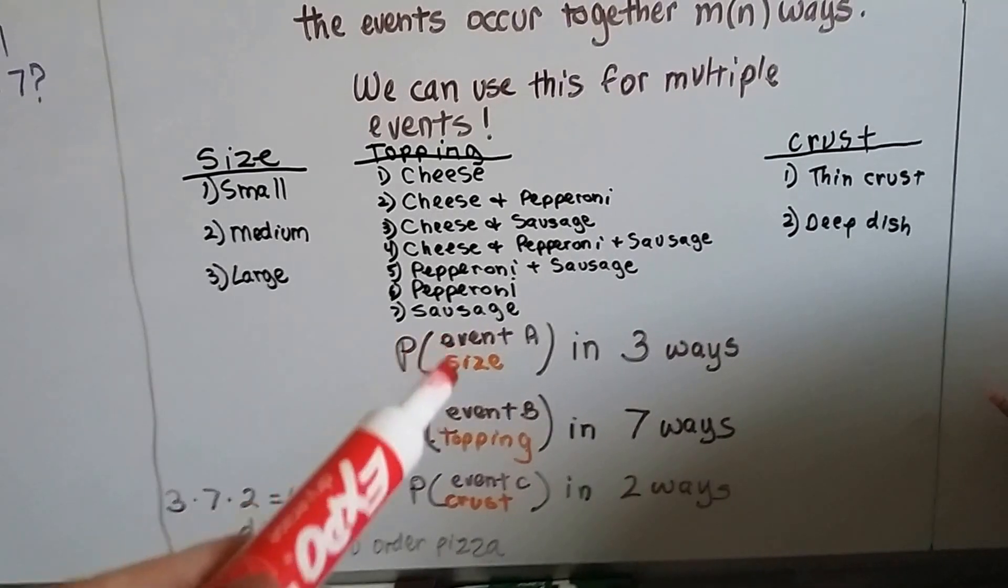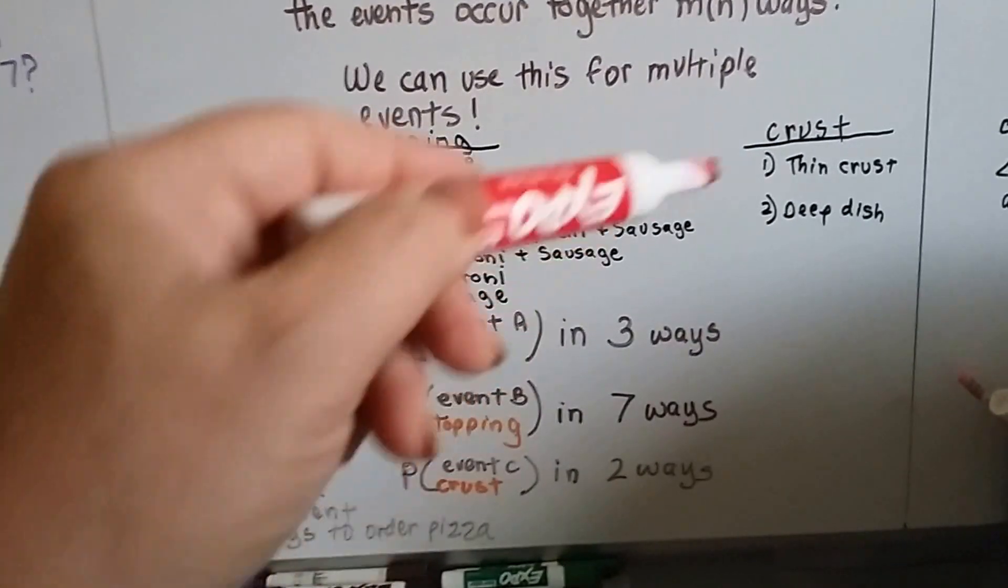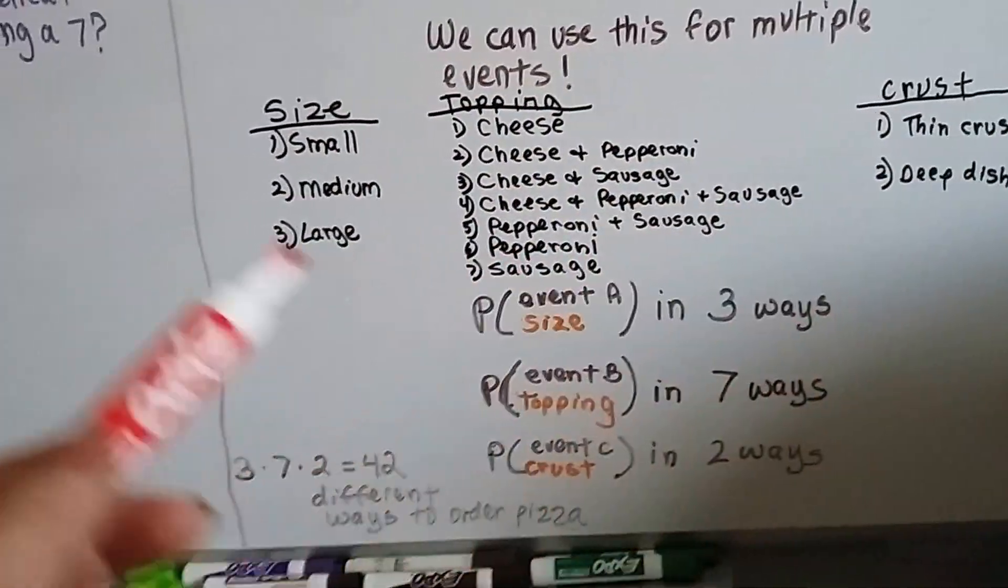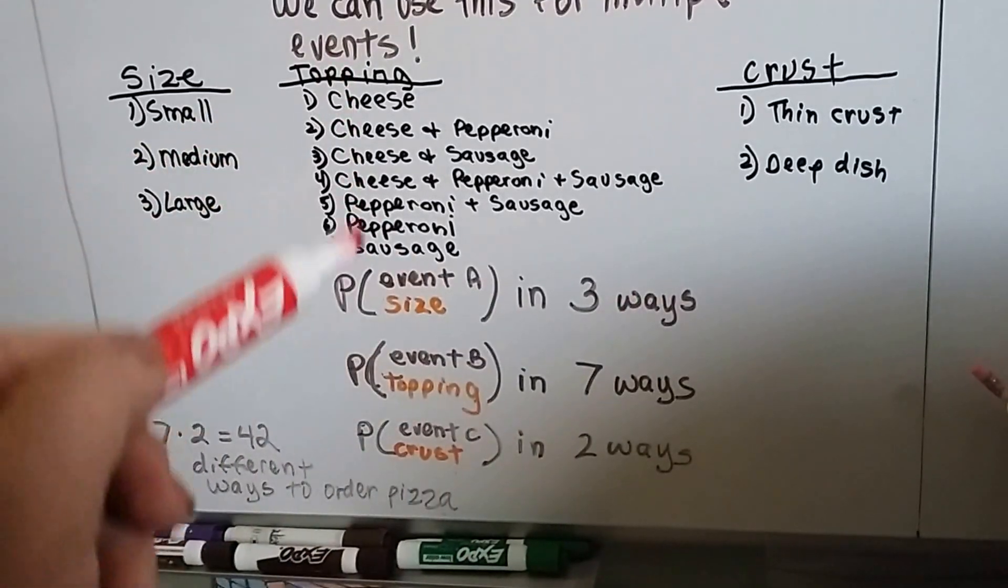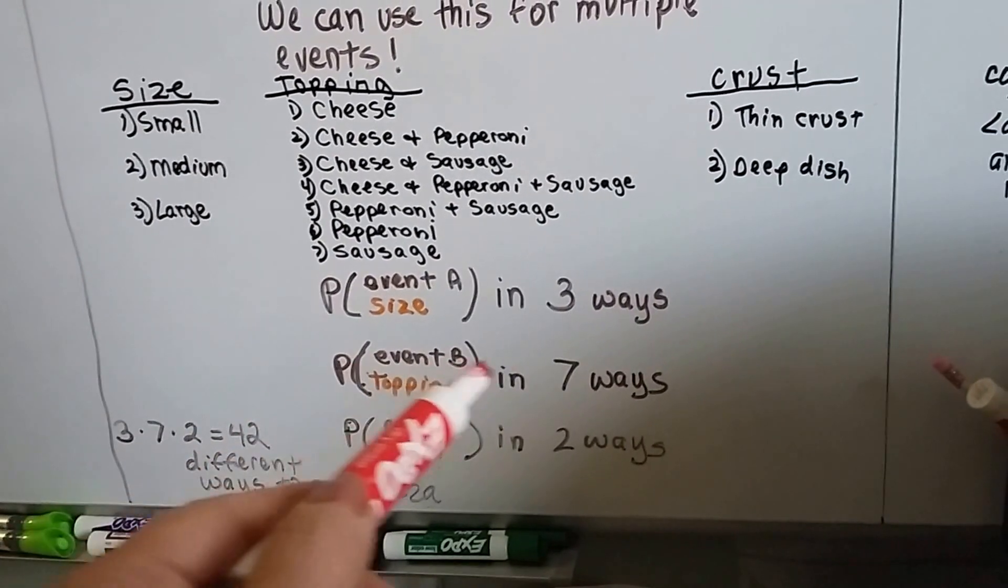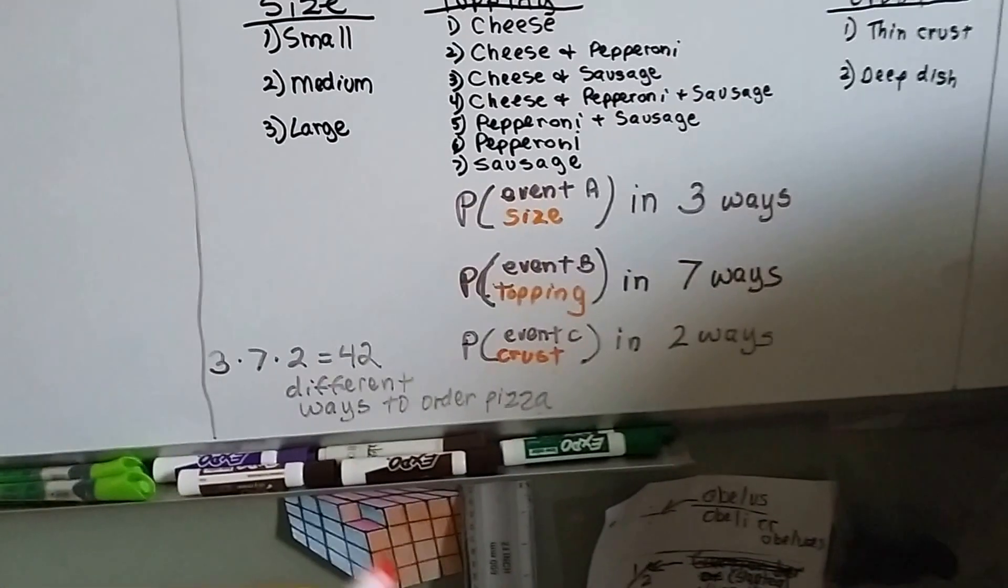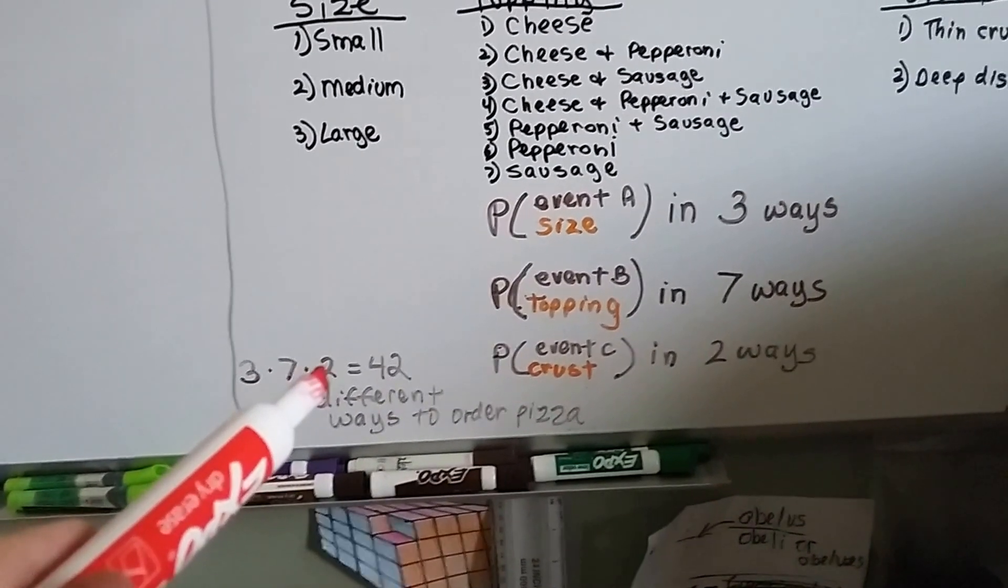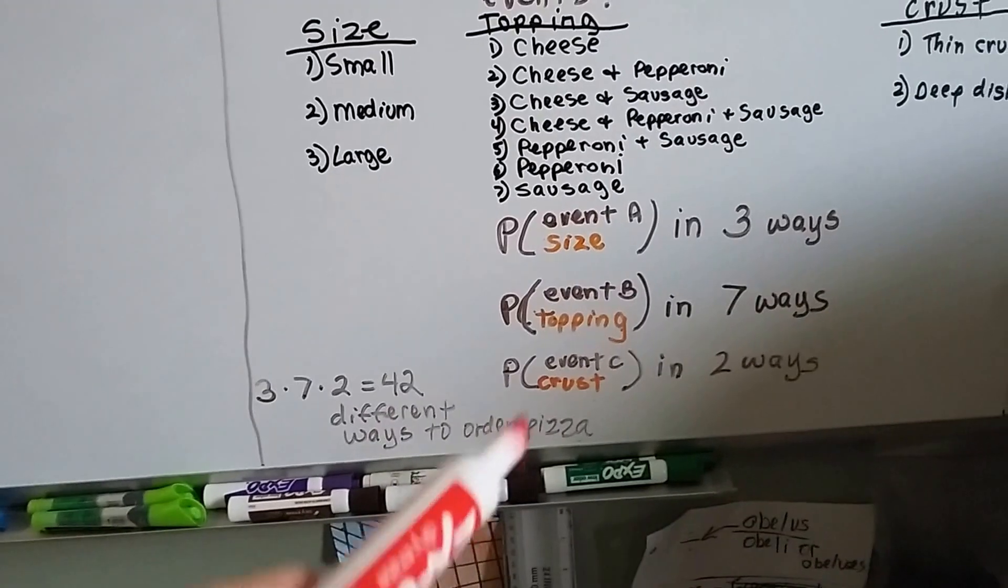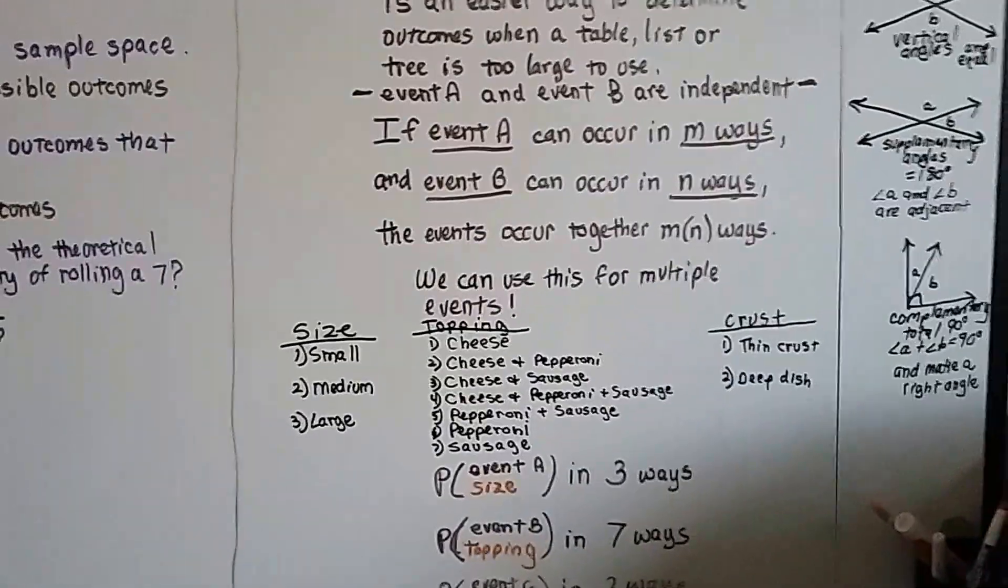That means that event A is the size, event B would be the topping, and event C would be the crust. To find out how many different ways we could combine these, well, there's three different types of size, so that's three ways. There's seven different ways to combine the topping, so the probability of the topping is seven ways, and the crust is two ways, thin or deep. And then what we do is we multiply them like it says here, M times N. Except now we've got three of them. So we're going to do three times seven times two. Three times seven is twenty-one, twenty-one times two is forty-two. So there's forty-two different ways that we could order pizza from these combinations.